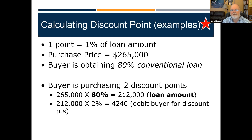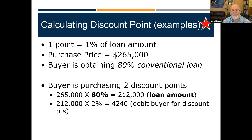One point is 1% of the loan. If we are purchasing $265,000 worth of house and getting an 80% conventional loan — keep in mind, points are not paid on the value of the house, they're paid on the loan amount. $265,000 times 80% is $212,000. I want to buy two points, so at closing I take $212,000 and multiply it by 2% — I'm going to have to pay an additional $4,240 for closing to get that lower interest rate.